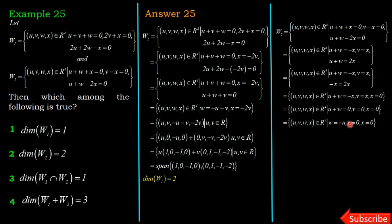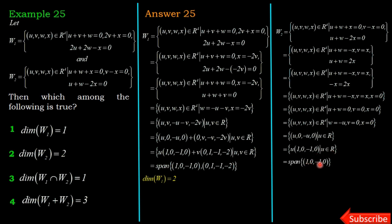With x = 0, v = 0, and w = -u, substituting into coordinates (u, v, w, x) gives (u, 0, -u, 0) = u·(1, 0, -1, 0) where u belongs to R. So W2 is the span of {(1, 0, -1, 0)}, which has dimension 1. Therefore the second option, dim(W2) = 2, is wrong.